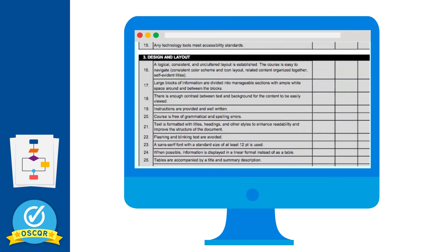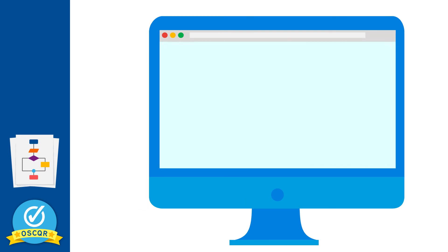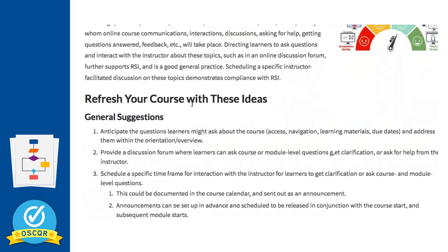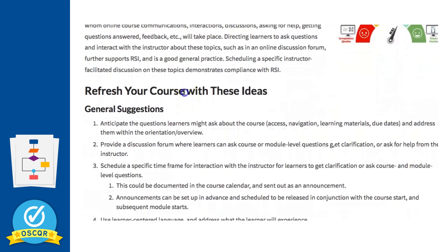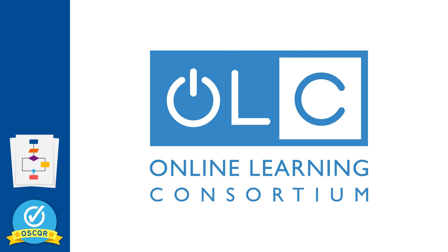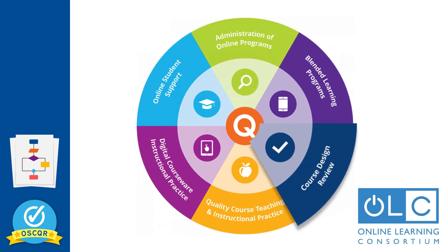The 50 OSCQR rubric standards also integrate specific ways to make an online course accessible to students with disabilities, and specific suggestions for ensuring regular and substantive interaction in online course design. OSCQR was adopted by the Online Learning Consortium in 2016 and is featured as the Online Course Quality Rubric in their suite of Online Quality Scorecards.